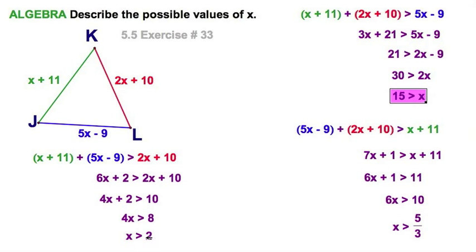5/3 is less than 2. When I analyze this and put this all together, I'm going to write it this way: 2 < x < 15. See, this satisfies this inequality, it satisfies this inequality, and it also satisfies this inequality.